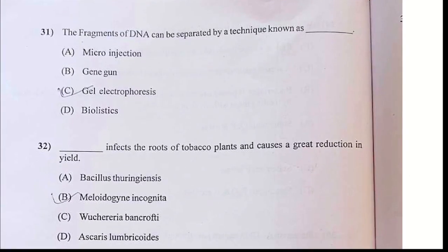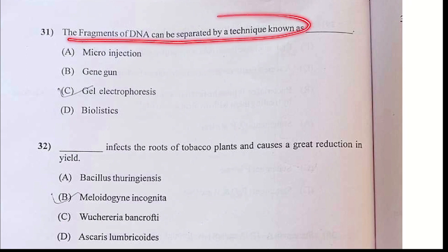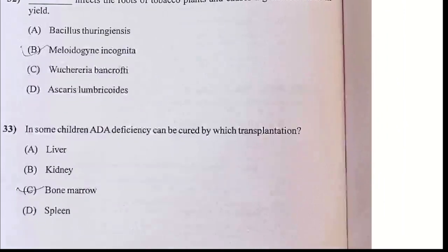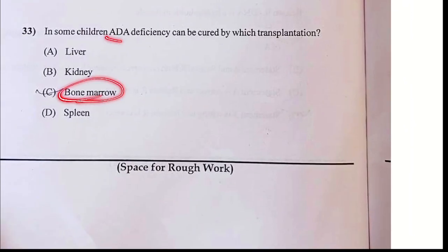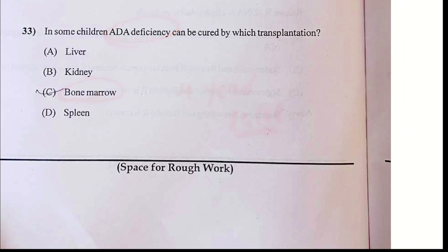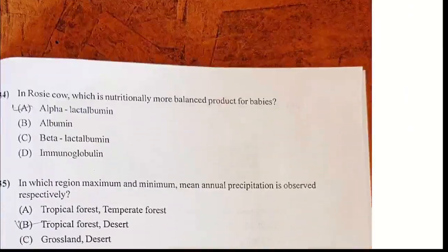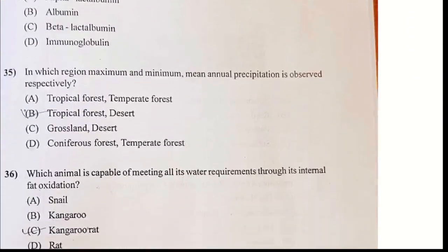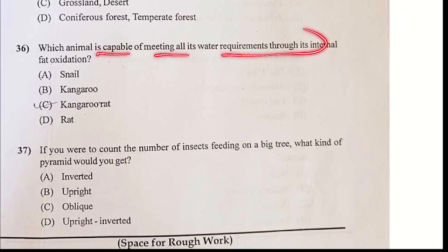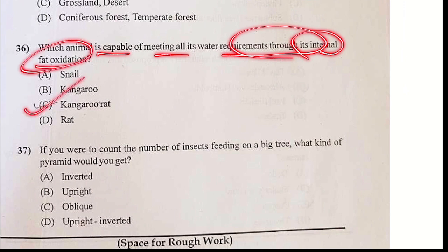Now look at the fragment of DNA. Fragments of DNA can be separated by gel electrophoresis. Meloidogyne incognita is related to the tobacco plant. In children, this is related to 4 years. ADA deficiency is treated by bone marrow transplantation. Rosy cow, alpha-lactalbumin. Question 35 — maximum and minimum is called tropical forest and desert. Which animal is capable of internal water oxidation? Your answer is kangaroo rat.